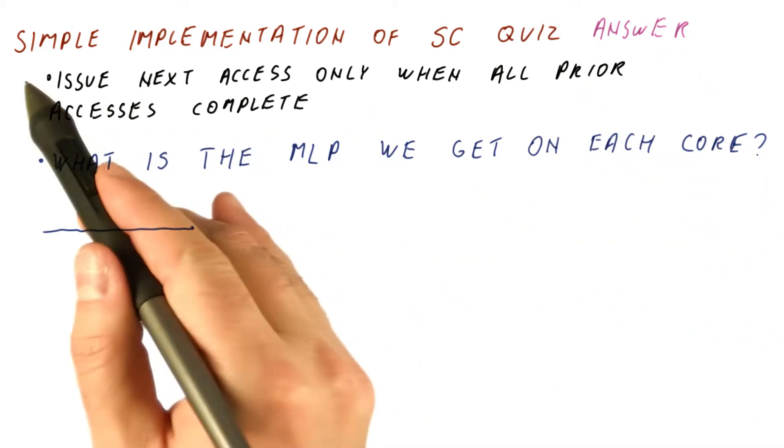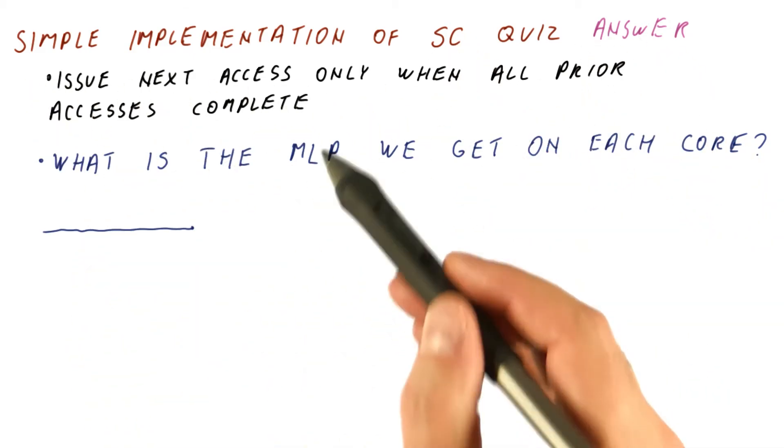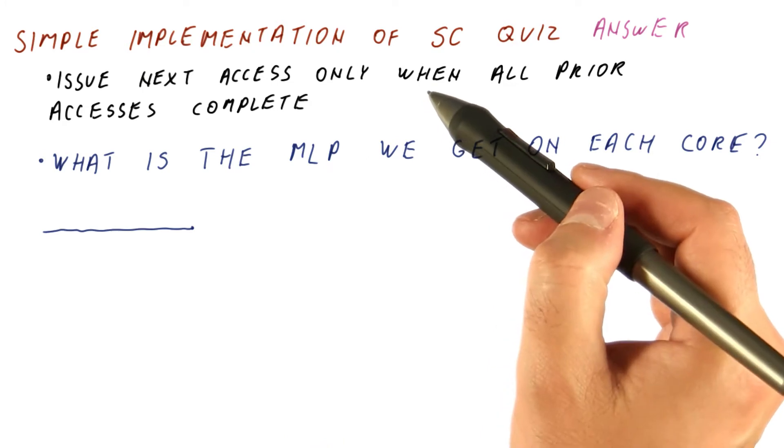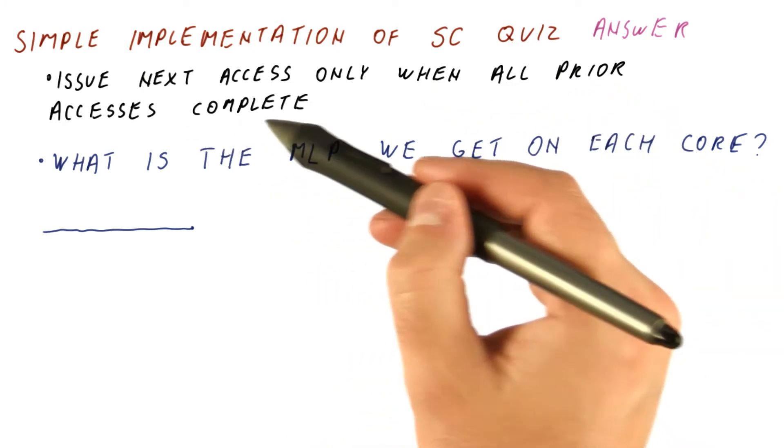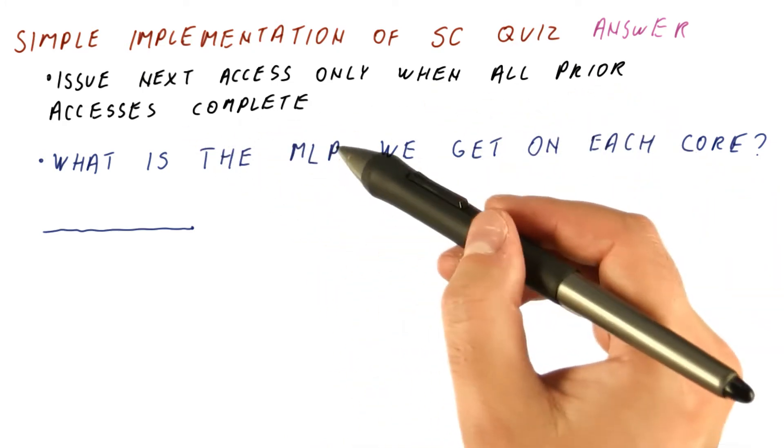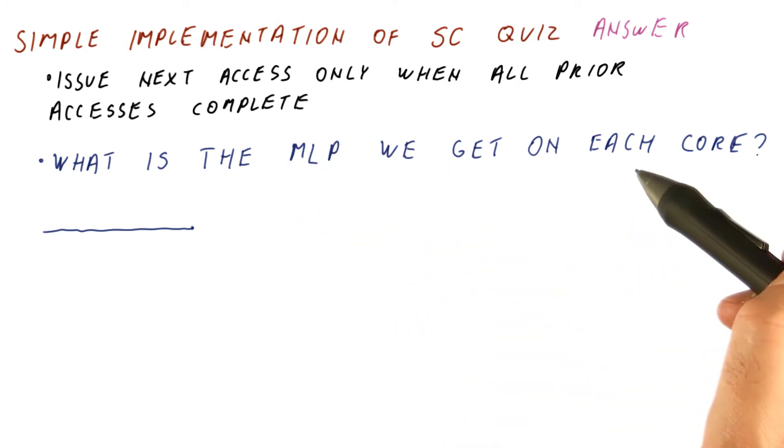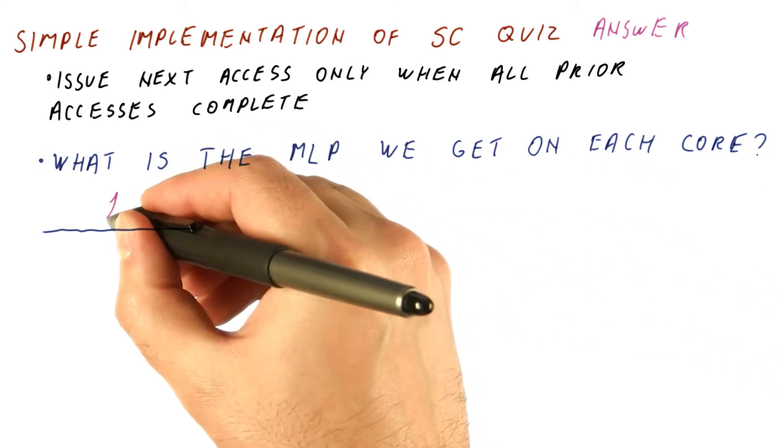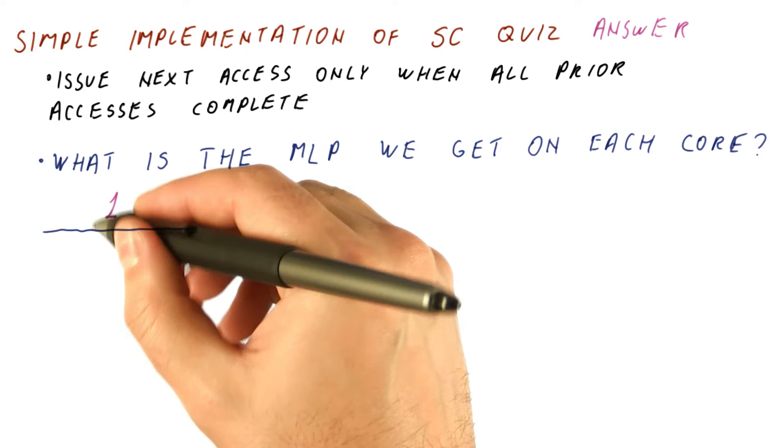So let's look at the answer to our simple implementation quiz. If we issue the next access only when all prior accesses are complete, what is the memory level parallelism we get? And the answer is the memory level parallelism is exactly one.